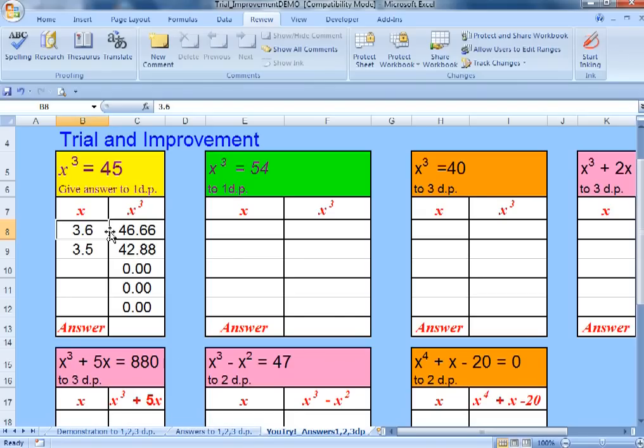Here's an example. I've gone for 3.6 and 3.5. We can see 3.6 is too big even though that's not indicated anymore because you're meant to work that out for yourself that it's too big. 3.5 is too small so let's go for something close to 3.6 but not quite.